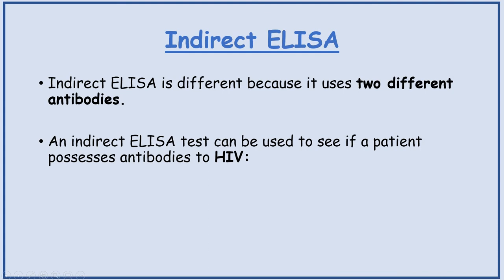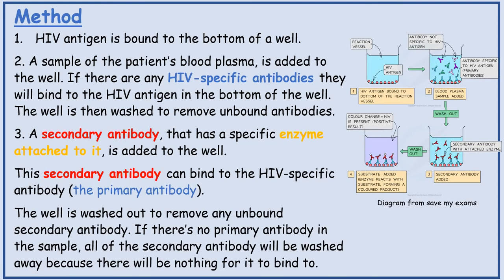Indirect ELISA. Indirect ELISA is different because it uses two different antibodies. An indirect ELISA test can be used to see if a patient possesses antibodies to HIV. So HIV antigen is bound to the bottom of a well. A sample of the patient's blood plasma is added to the well. If there are any HIV-specific antibodies, they will bind to the HIV antigen at the bottom of the well.